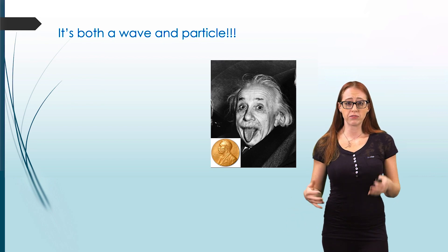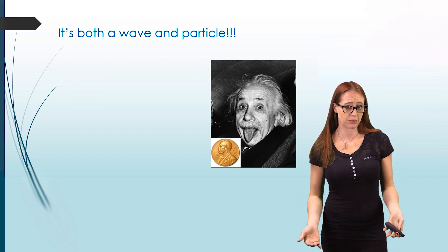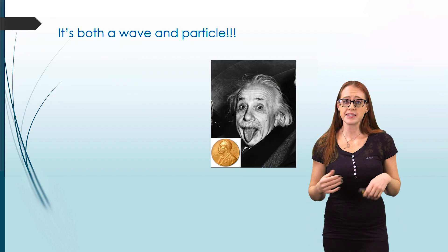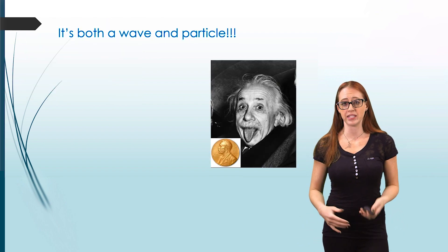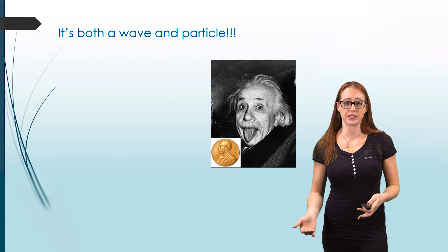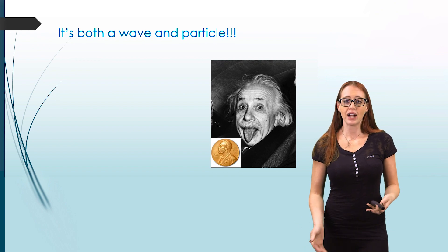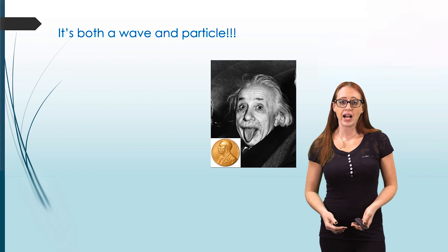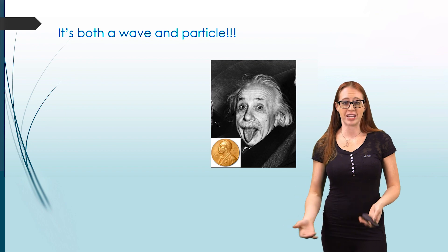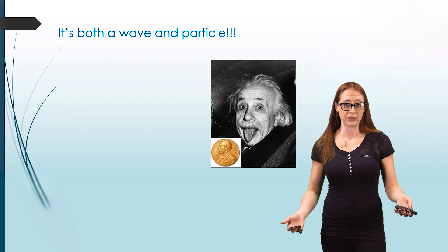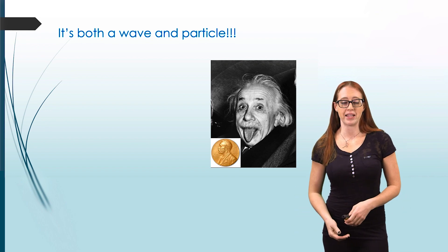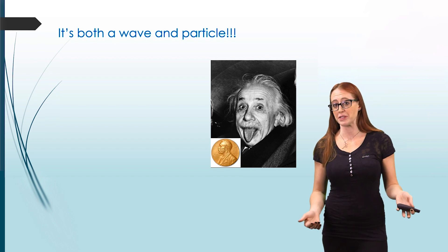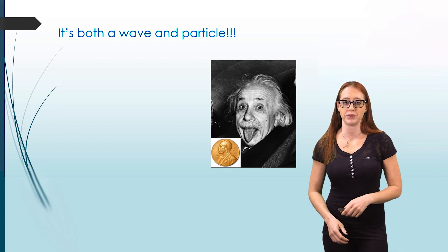The photoelectric effect is actually what Einstein won his Nobel Prize for. Since he's so well known for his theory of relativity, often people think that was what his Nobel Prize was for. However, it was actually for the photoelectric effect. There's actually a lot of interesting controversy about this, and if you ever want to go deep diving into the history of science, this is an interesting area to do it.